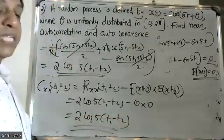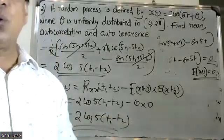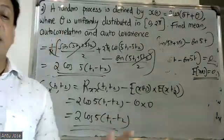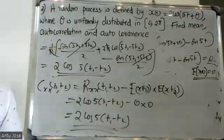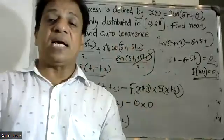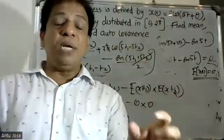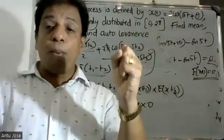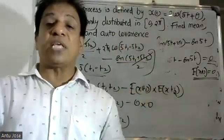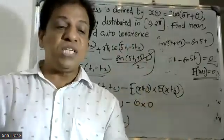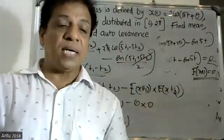The covariance C_xx(t1, t2) = R_xx(t1, t2) − E[x(t1)] × E[x(t2)] = 2cos(5(t1 − t2)) − 0 = 2cos(5(t1 − t2)). The problem states θ is uniformly distributed between 0 and 2π, and the probability density function f(θ) = 1/(2π) for 0 < θ < 2π.